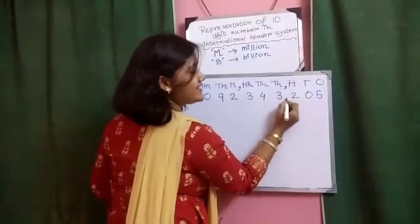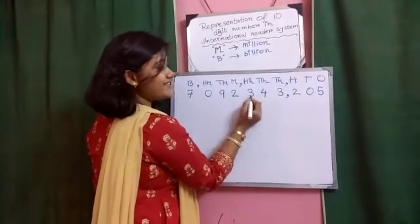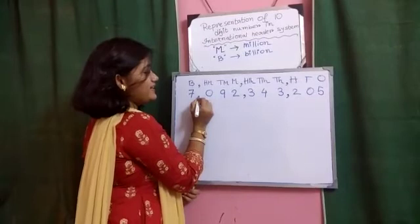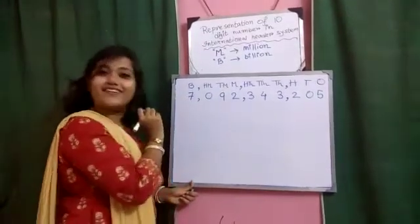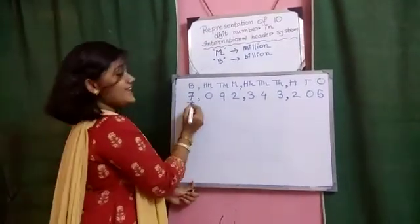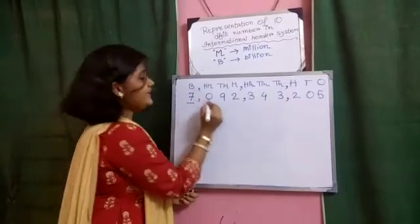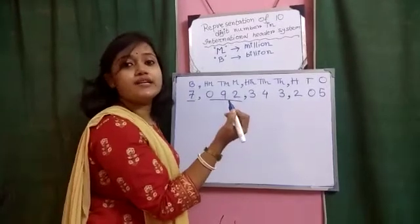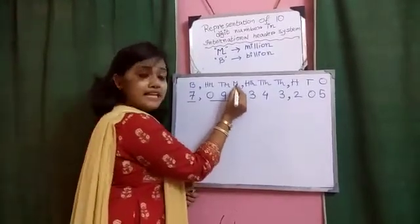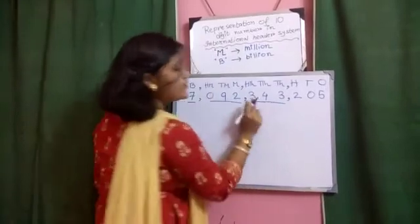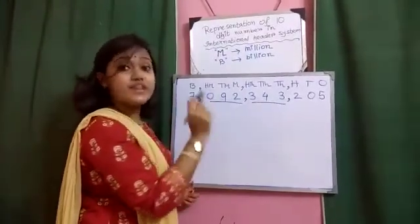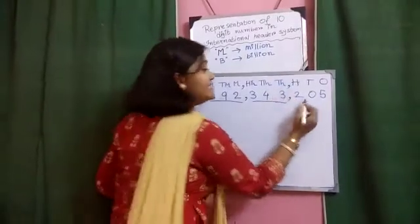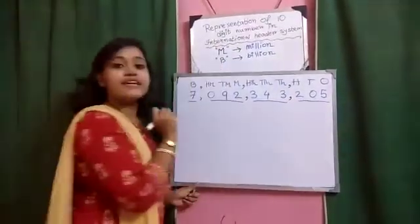So, where to put the separator or comma? Once, tens, hundred, comma. Thousand, ten thousand, hundred thousand, comma. Million, ten million, hundred million, comma. Billion. Okay? Now, 7,092,343,205. That is, 343,205.